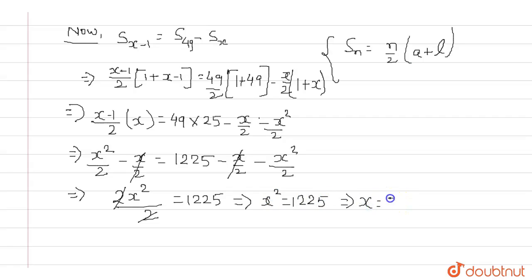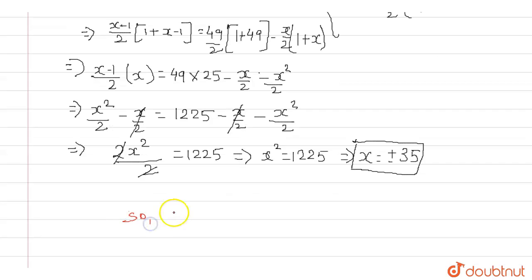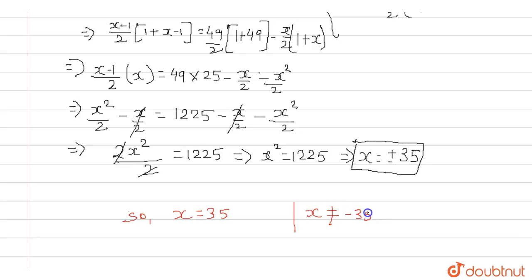So the value of x will be plus or minus 35. Since x must be positive and fall within the series 1 to 49, we take x = 35. Minus 35 does not come under that series, so x is not equal to minus 35. Therefore, x equals 35 is our required answer.